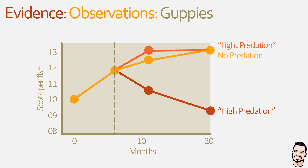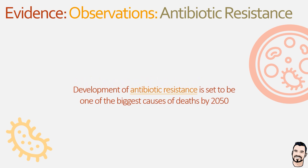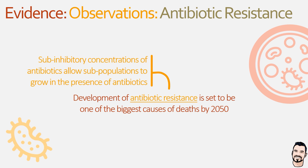Our second example of observable microevolution is the development of antibiotic resistance. Since the introduction of antibiotics in the 1940s, the speed at which bacteria are developing resistance suggests antibiotic-resistant infections will be the biggest cause of deaths by 2050. By treating bacterial populations with sub-inhibitory concentrations of antibiotics, we can induce resistance. The antibiotics kill some of the population, but a sub-population that can grow in the presence of the antibiotic — possibly due to some mutation — survives and grows to be the dominant population, relating to the founder's effect.